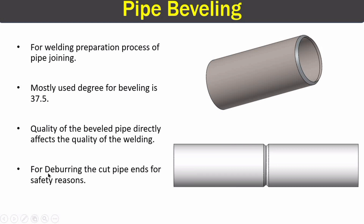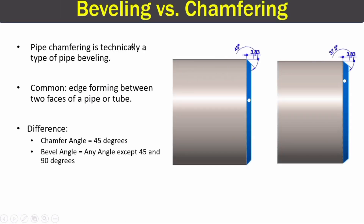The most important thing in pipe beveling is the quality of the pipe bevel because it directly affects the welding quality. Beveling can also be used for removing edges from the end of pipes for safety reasons. Now, the difference between beveling and chamfering is mainly the angle. In this image you can see a 45 degree angle — that is chamfering. For beveling, the angle is 37.5 degrees, as shown in this image. So the only difference between beveling and chamfering is the angle.